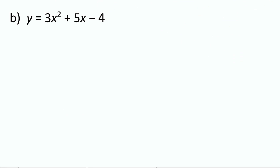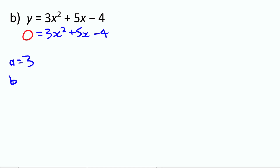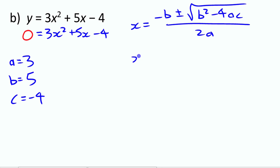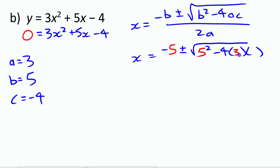Let's try one more. We want to find x-intercepts, so we're looking for when the function equals zero. For this example, a is 3, b is 5, and c is negative 4. Substituting into the formula: x equals negative 5, plus or minus the square root of 5 squared minus 4 times 3 times negative 4, the entire thing divided by 2 times 3.